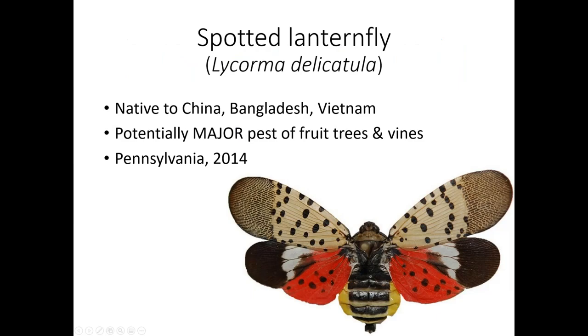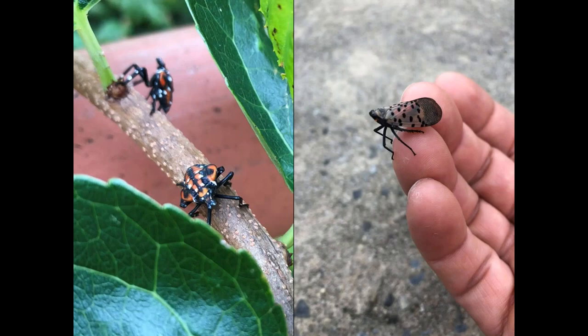Our next one is the spotted lanternfly — our most recent high-profile invasive and potentially a major pest of fruit trees and vines. It was first found in Pennsylvania a few years ago. Here's a couple of spotted lanternflies — one crawling on a branch and one on the tip of my finger so you can see it's a large insect, about one-half to three-quarters of an inch long, very bright and obvious looking.